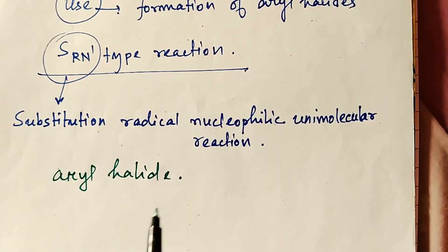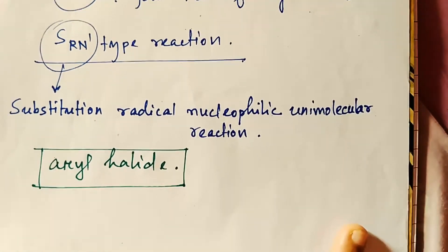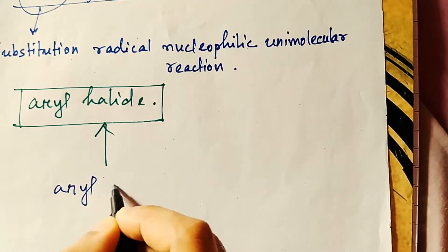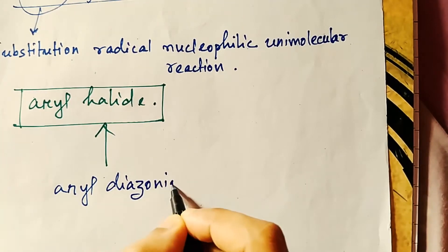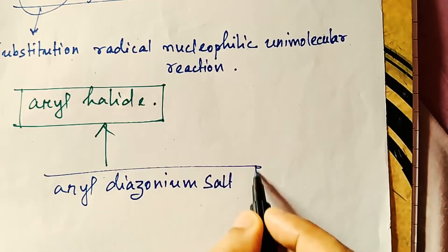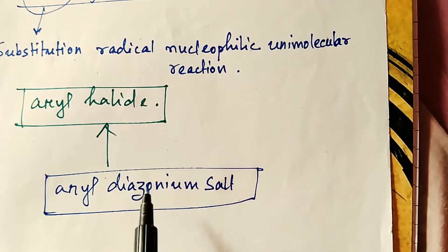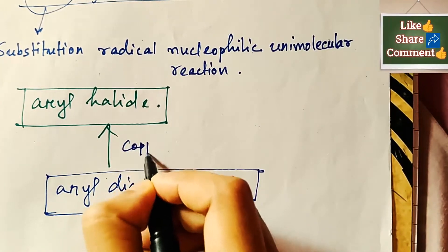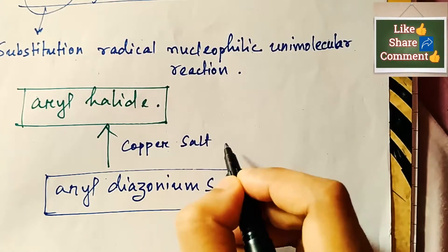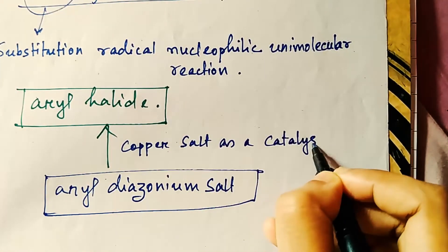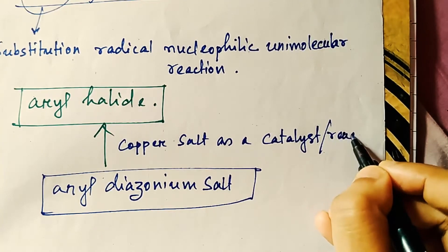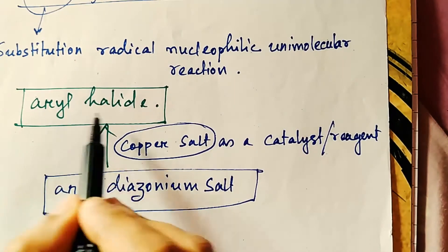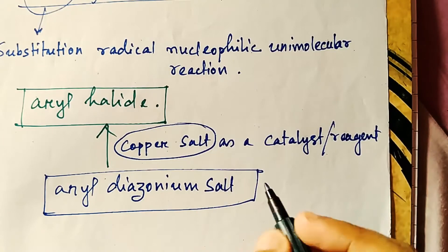In this reaction, aryl halide is formed from aryl diazonium salt. Copper salt is used as a catalyst or reagent. So aryl halide is forming from aryl diazonium salt using copper salt as a catalyst or reagent.